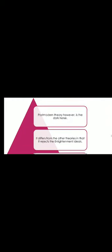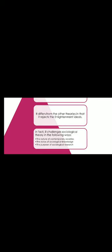It is basically supposed to be the era after modernity, which we call post-modernity. And we'll see a lot of these terms that sound and look almost the same, but they're really quite different, although related. Post-modern theory differs from the other theories in that it rejects the Enlightenment ideals. In fact, it challenges sociological theory in the following ways: it challenges the ontology of the nature of contemporary societies, the status of sociological knowledge, and the purpose of sociological research.